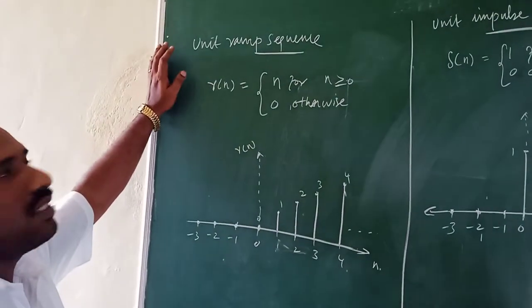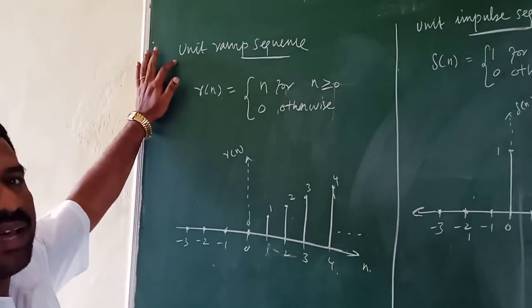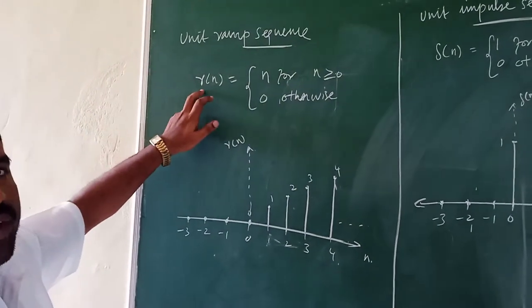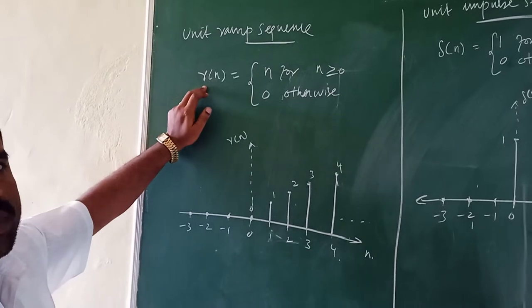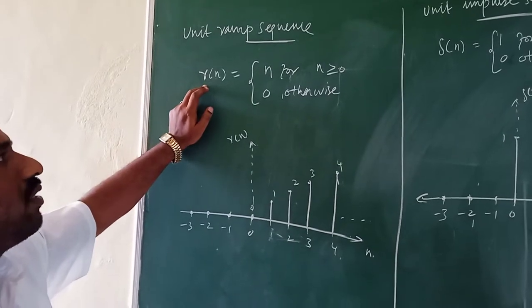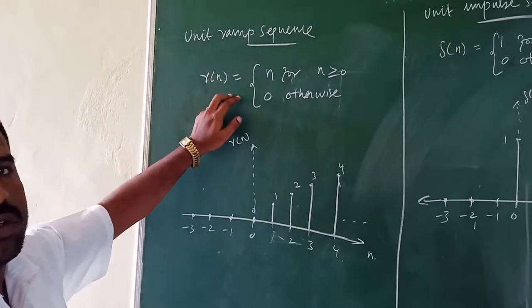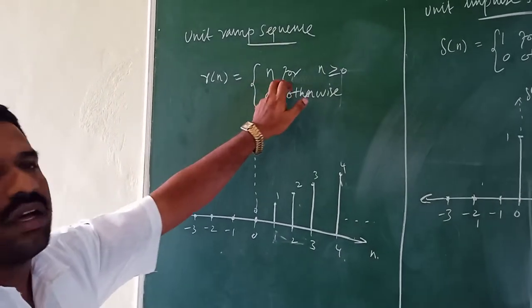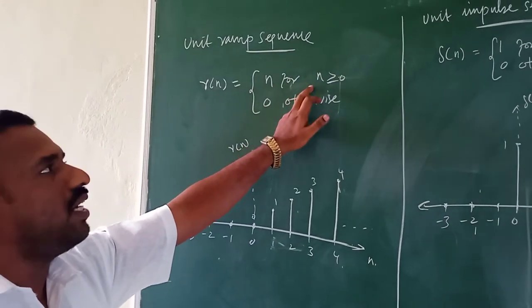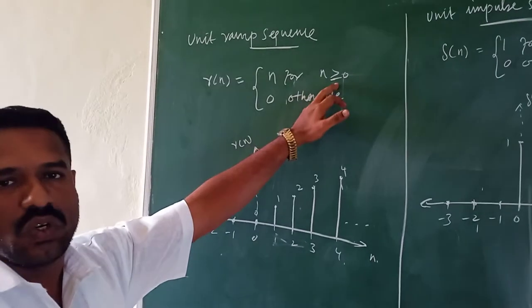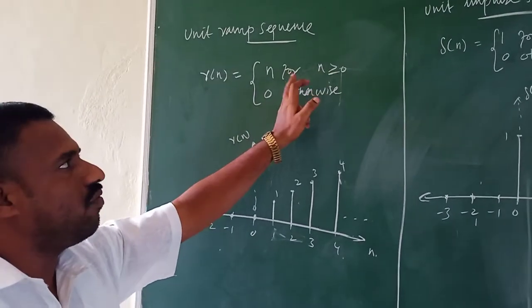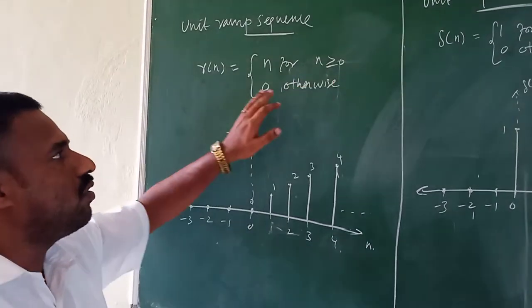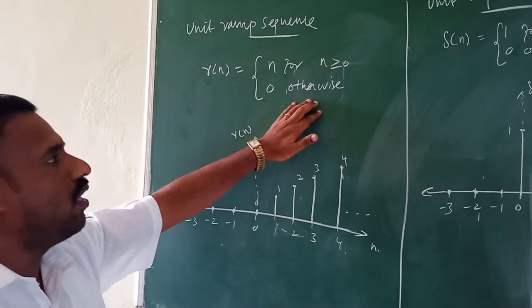Next, we are going to see the unit ramp sequence, that is R of n. We can represent R of n as equal to n for n greater than 0, and 0 otherwise.